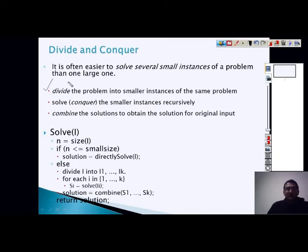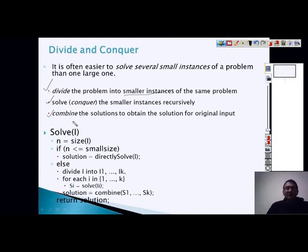When we talk about divide and conquer, we are doing three steps: we are dividing the problem into smaller instances or smaller size problems, then we solve these smaller problems, and then we combine all these solutions. Because we are looking for a solution for the larger problem, you divide into smaller size, solve individually, and then combine.